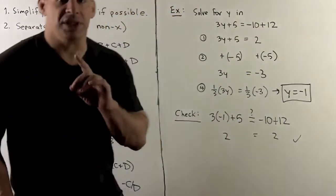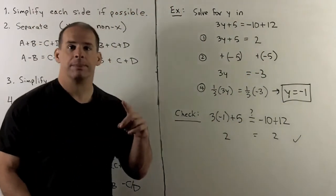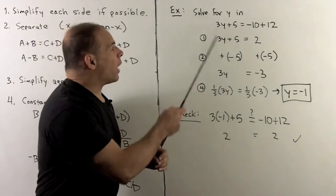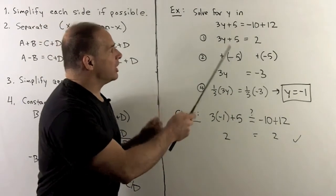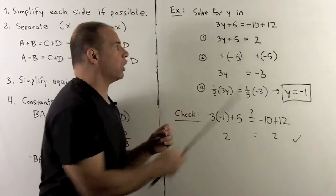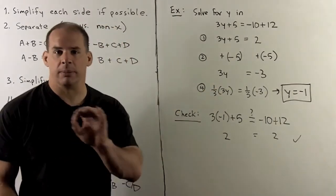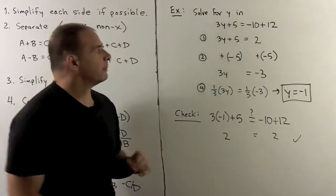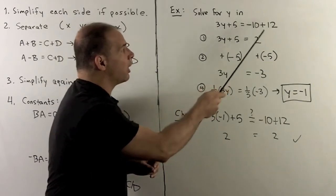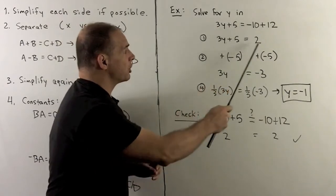We'll work through a few examples. First example: I want to solve for y in the equation 3y + 5 = -10 + 12. First step, we see if we can simplify things. I note I can combine -10 and 12 to get 2. So that's my first step.